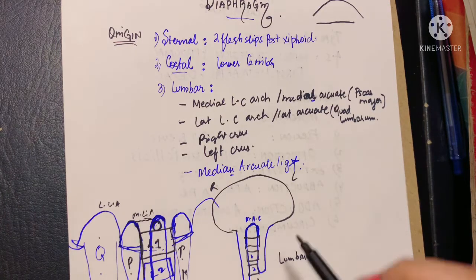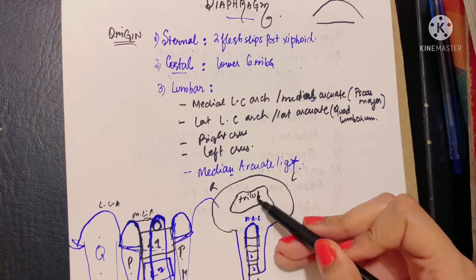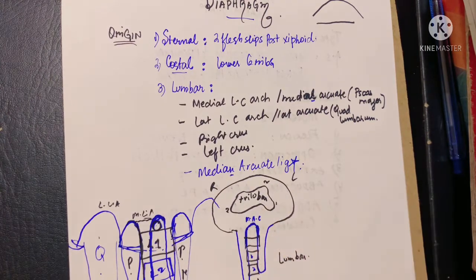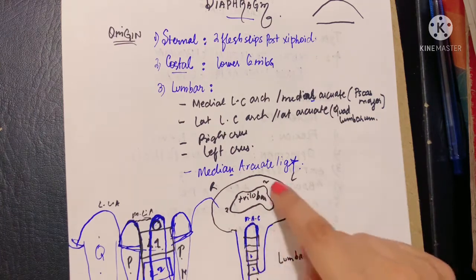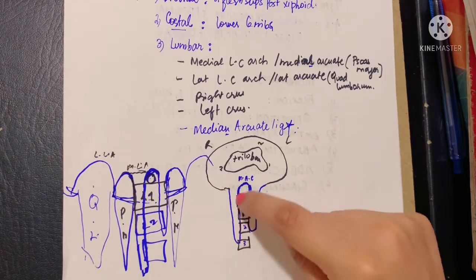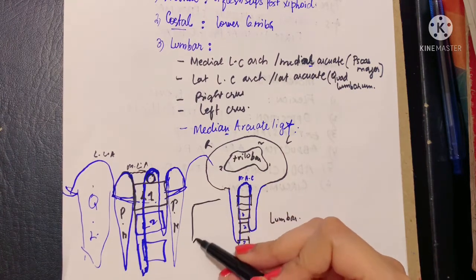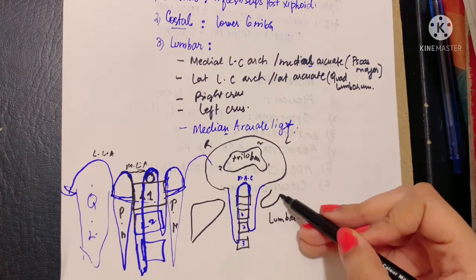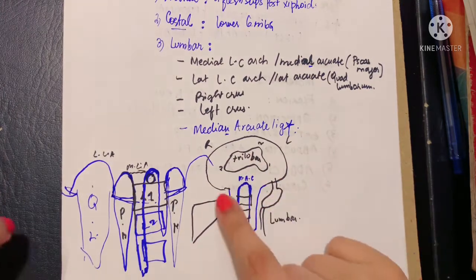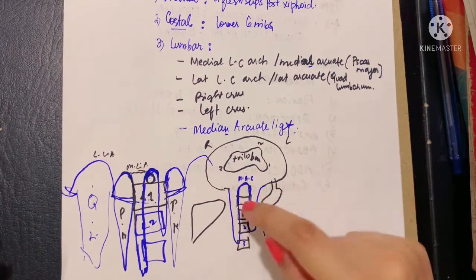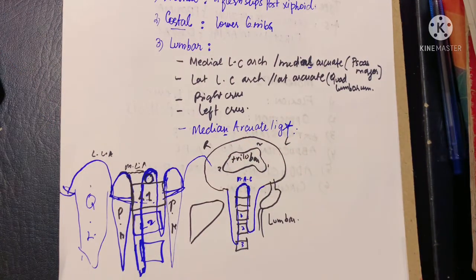The diaphragm is inserted via the central tendon, which is trilobar — it has three lobes. The entire circumferential origin meets at the central tendon as the insertion point of the diaphragm. The right crus is lower than the left because the liver lies beneath the right side of the diaphragm. The stomach lies on the left but is smaller than the liver, so the right dome of the diaphragm is higher than the left.